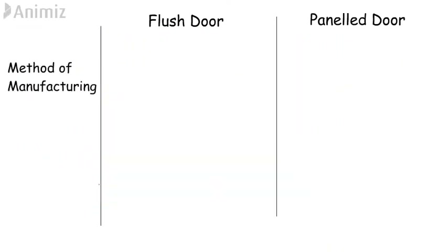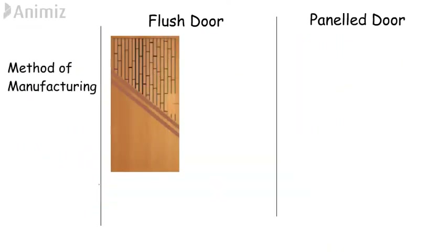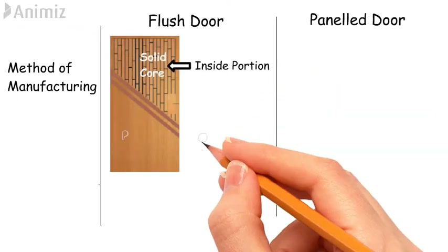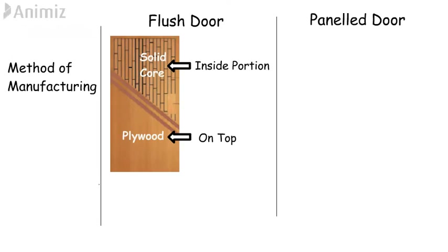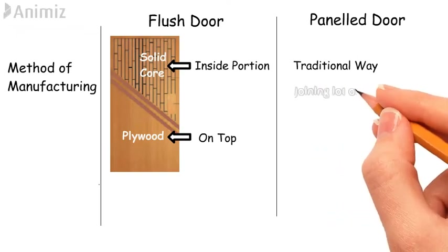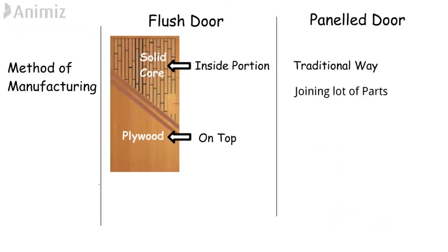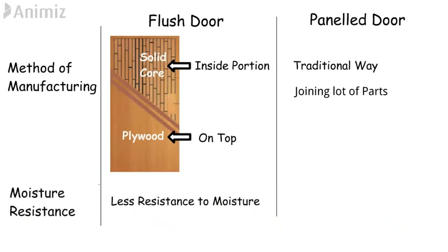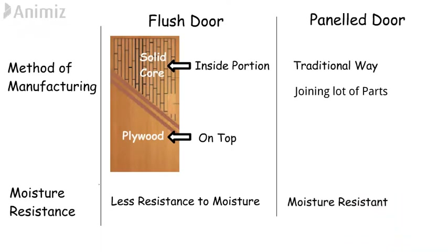Method of manufacturing: Flush door is manufactured using a wooden framework consisting of solid core materials with a finishing of plywood on top, whereas manufacturing of panel door is done in the traditional way using lots of joining of parts, which includes stiles, rails, etc. Moisture resistance: Flush doors are less resistant to moisture as the top veneer or laminate can start delaminating due to moisture, whereas panel doors are more resistant to moisture.